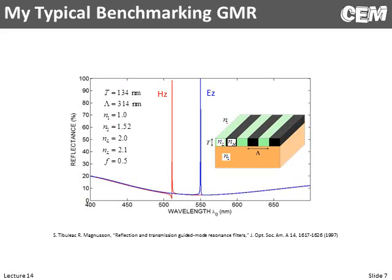This is the guided mode resonance filter I always use to benchmark my codes. There's nothing that makes it better than another guided mode resonance filter — I just am easily able to remember these numbers. We'll model this as a 2D structure so there will be an E mode response and an H mode response. Notice the background response is pretty constant — that's what you'd model with transfer matrix method — but it definitely has a polarization response and produces resonances at two different wavelengths.